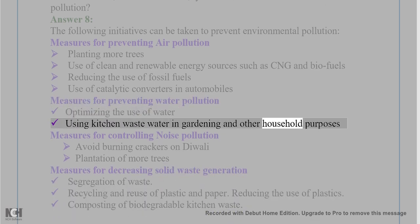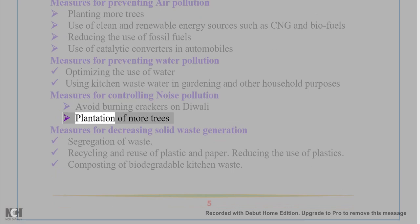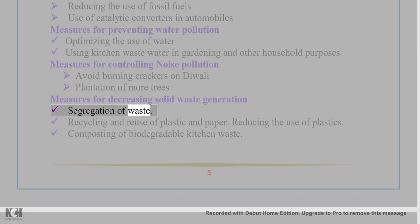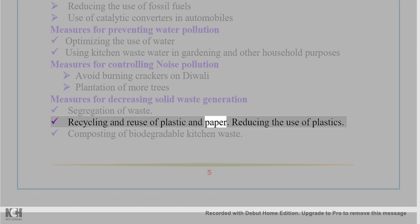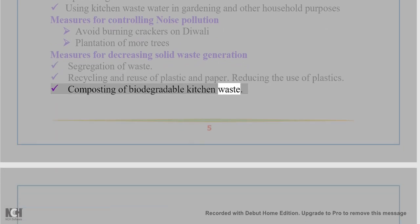Measures for controlling noise pollution include avoiding burning crackers on Diwali and planting more trees. Measures for decreasing solid waste generation include segregation of waste, recycling and reuse of plastic and paper, reducing the use of plastics, and composting of biodegradable kitchen waste.